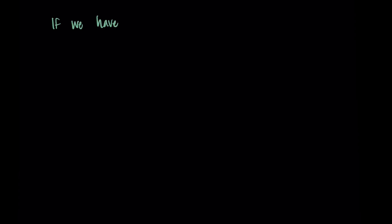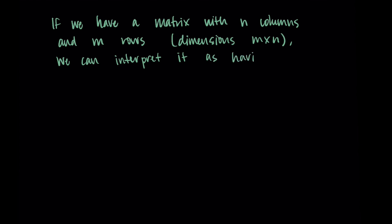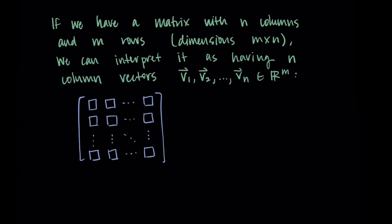Lastly, I just want to talk about a way that we can interpret a matrix with this new vector idea. So if we have a matrix that is n columns and m rows, so its dimensions are m by n, then we can interpret it as having n column vectors. So we can think of each column as a vector, V1 through Vn, and these would be an element in R^m since they have m rows. So let me show you what that looks like.